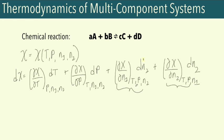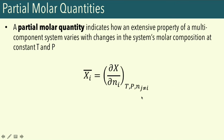These partial derivatives are called partial molar quantities. Overall, partial molar quantities indicate how an extensive property of a multi-component system varies with changes in the system's molar composition at constant temperature and pressure. The general expression for a partial molar quantity for extensive property X for component i is the change in X with respect to the number of moles of component i, while T, P, and all other components remain constant. The notation uses a bar on top of the symbol. Partial molar quantities are intensive properties — dependent only on composition, not size.